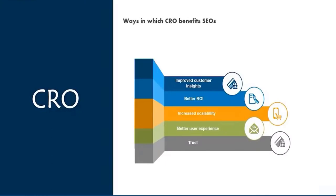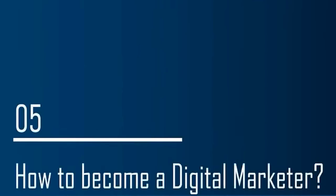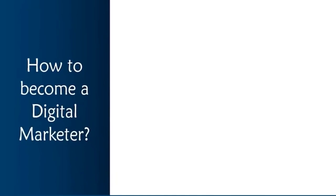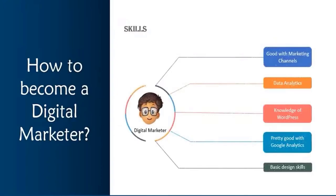So that was about CRO. Now let's move on to the next topic in this digital marketing tutorial — how to become a digital marketer. In order to become a successful digital marketer, you need to possess certain skill sets: specific marketing channel expertise, experience working on marketing campaigns, the ability to execute and analyze campaigns, basic knowledge of WordPress, the ability to sell products, and staying updated with the latest technology trends.